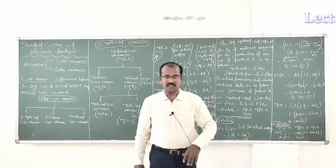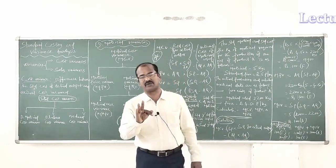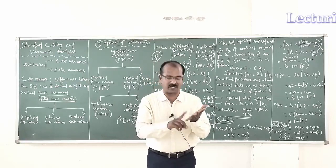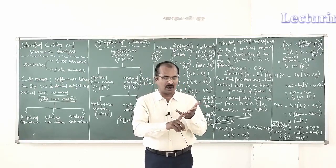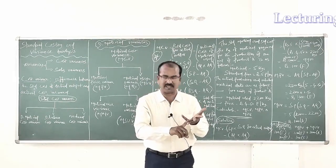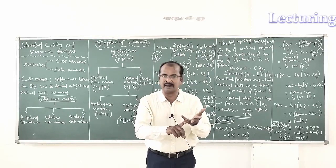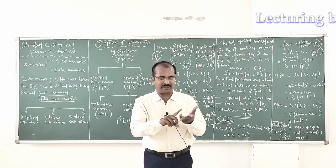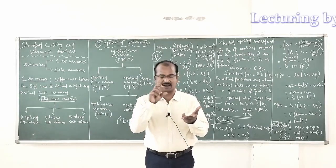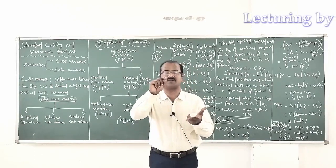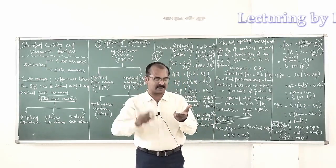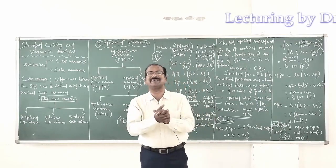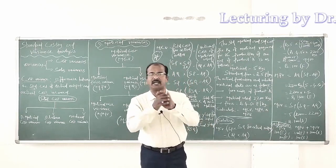With regard to standard costing, there are three activities carried out fundamentally. Number one: determination of standard cost, or determination of the cost of offering something. Number two: after offering or producing something, we measure the actual cost incurred. Number three: we compare the actual cost with the standard cost to understand the causes for any deviations. On the whole, standard costing facilitates an organization to measure the efficiency of the people involved in producing something.